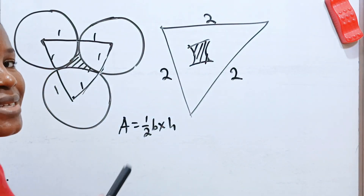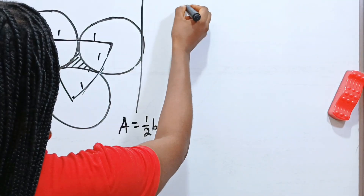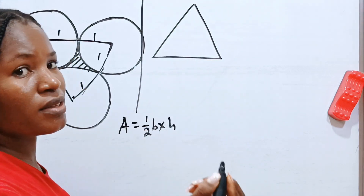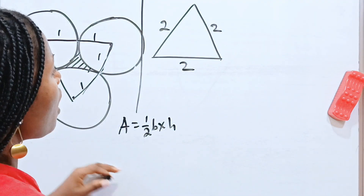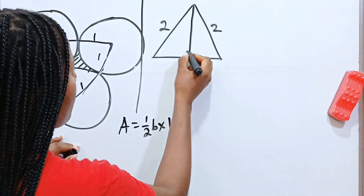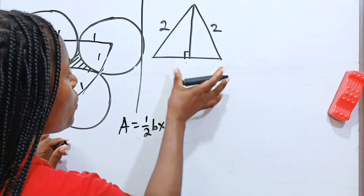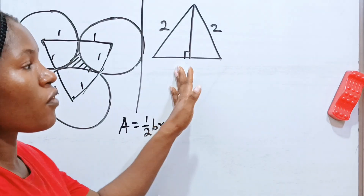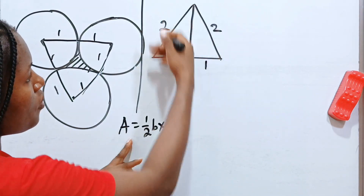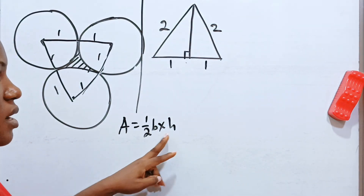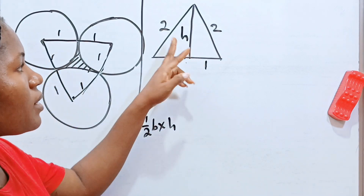Let me stand here so I can maximize the board. I'll redraw this into something smaller. We have an equilateral triangle of side 2. If we draw a straight line from the apex down, it divides the base into two equal parts of 1 and 1. This line is our height, and the height is unknown.